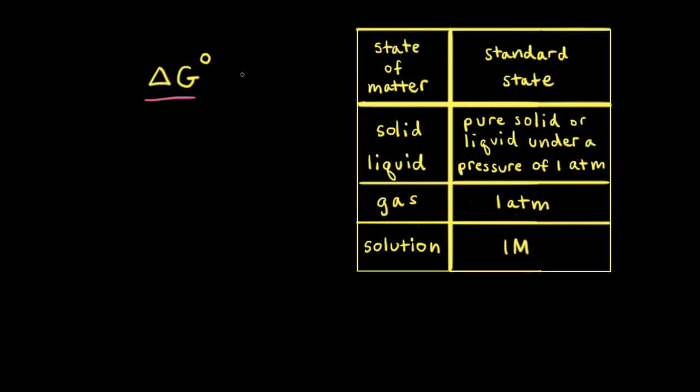When we see delta G with the superscript naught, we're talking about the change in Gibbs free energy when substances are in their standard states. By convention, the standard state of a solid or liquid refers to the pure solid or pure liquid under a pressure of one atmosphere. The standard state of a gas refers to the pure gas at a pressure of one atmosphere, and the standard state of a solution is a one molar concentration.